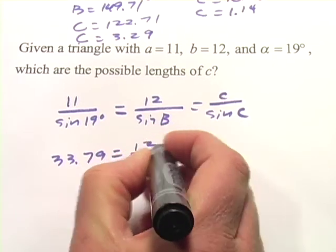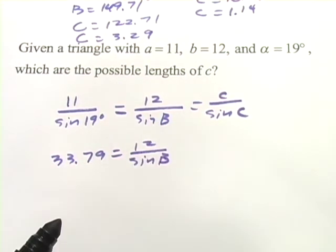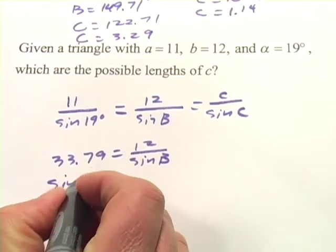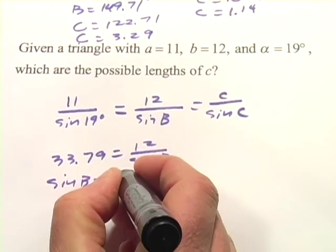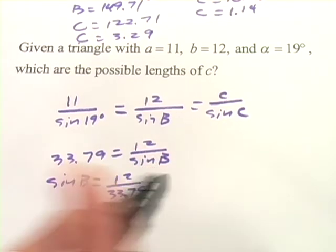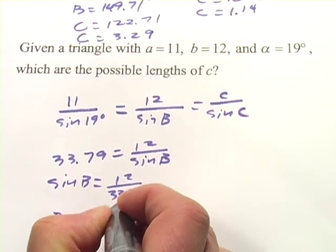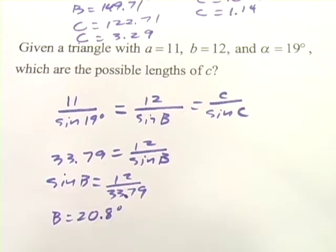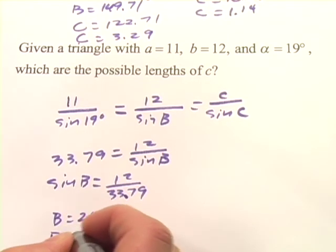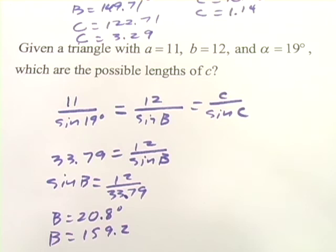And then we'll solve for B here and then find the other possible angle. So that would be, rearranging this, the sine of B would be 12 divided by 33.79. And what we get here is B equals 20.8 degrees. And we'll subtract from 180 to get the other possible angle, or B equals 159.2. So those are the two possible angles for B.